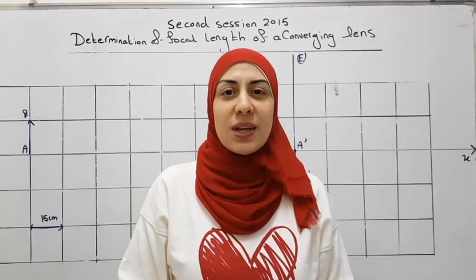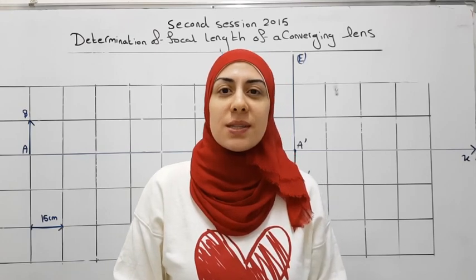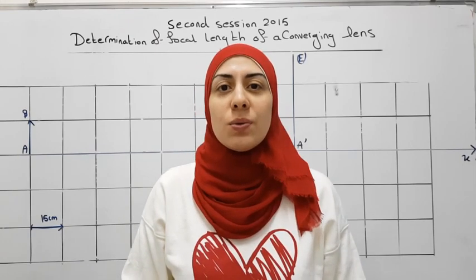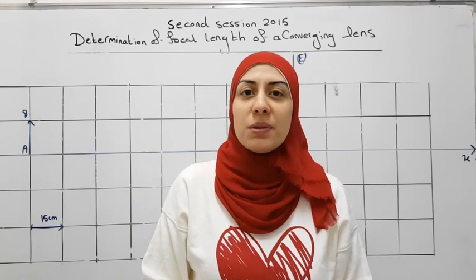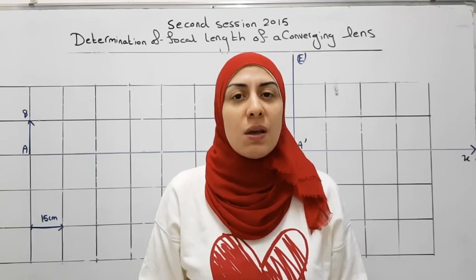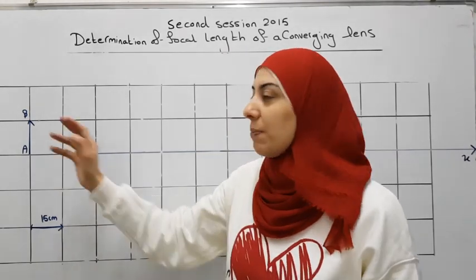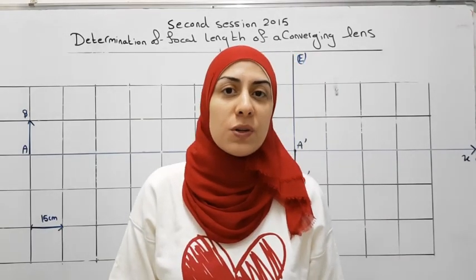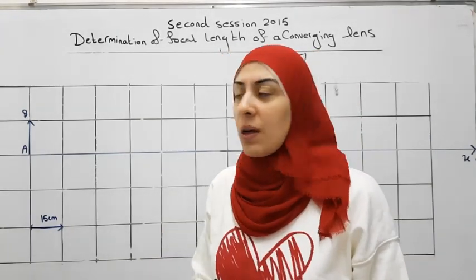Hello and welcome to my channel. In this video, we will solve the optics exercise from the second session 2015 about determination of the focal length of a converging lens. For this, we place an object AB at distance P from a converging lens that is not shown on the figure.